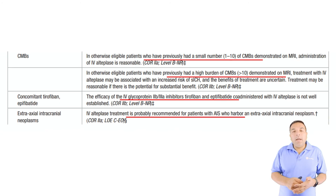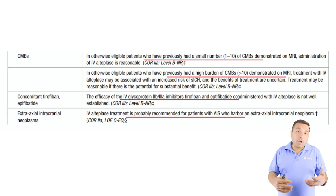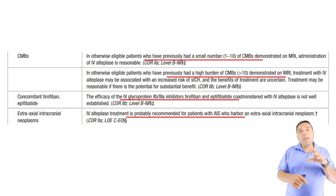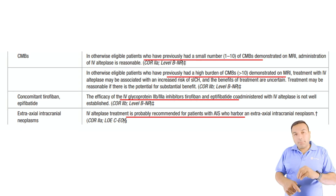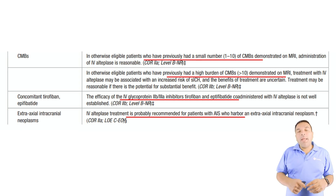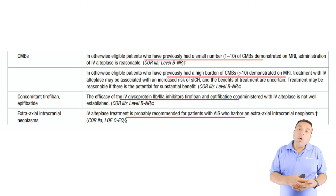Cerebral microbleeds (CMBs): for 1 to 10 microbleeds, go ahead and give TPA — the level of recommendation is 2a, a moderate recommendation. For more than 10 known CMBs on a previous MRI, you should still consider it, though the COR drops to 2b, a weaker recommendation.